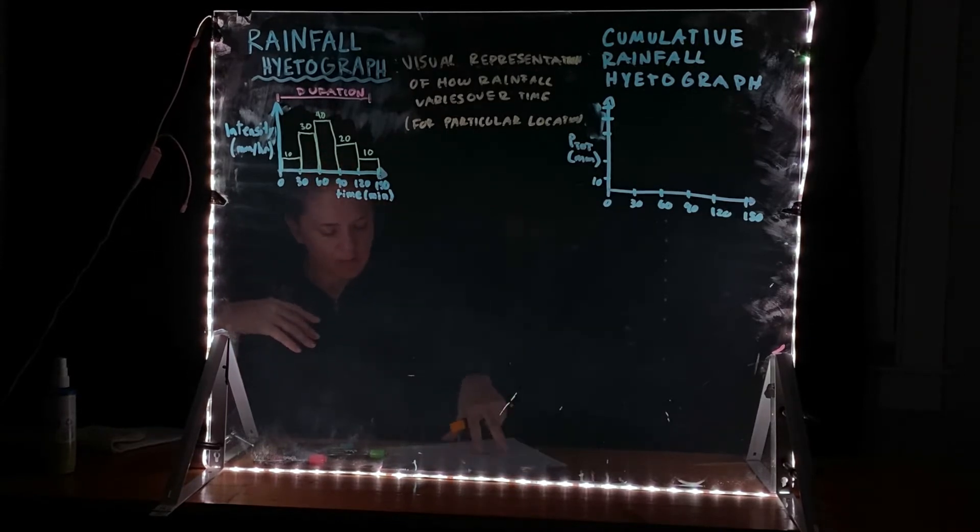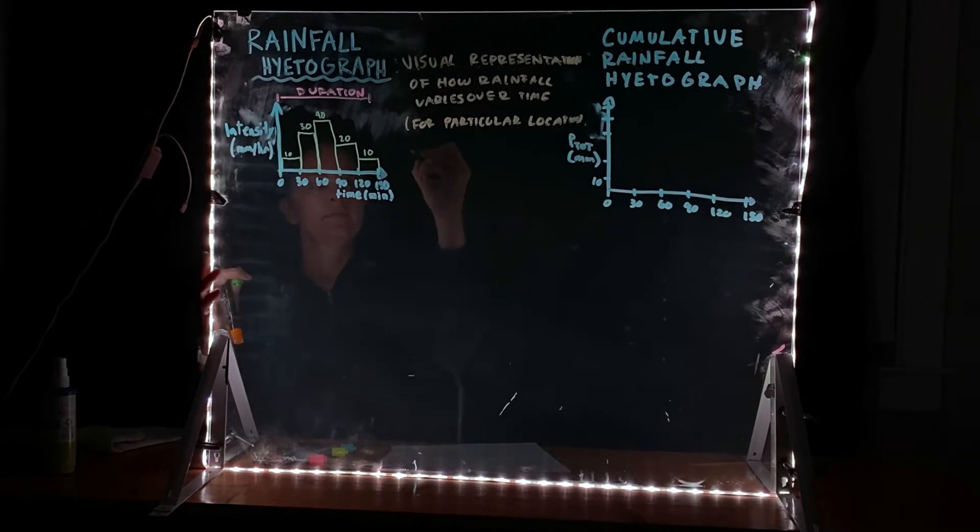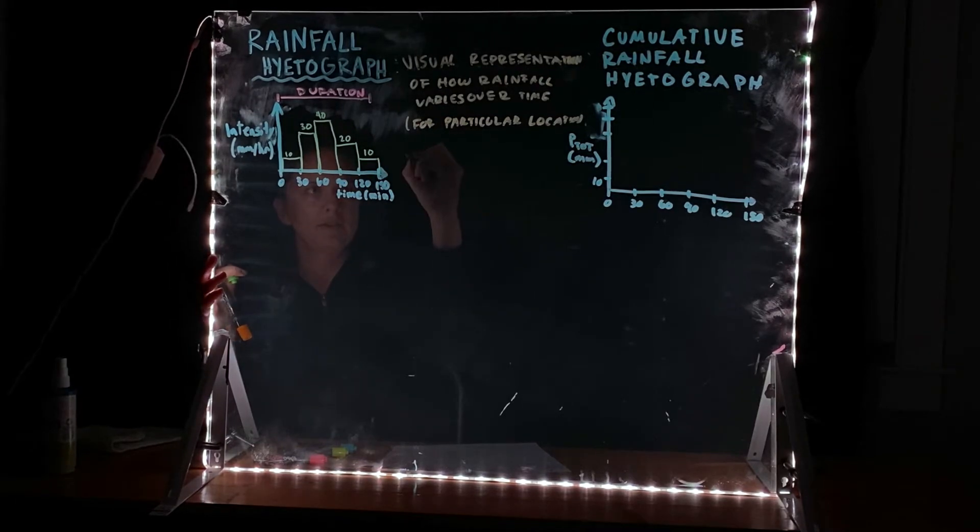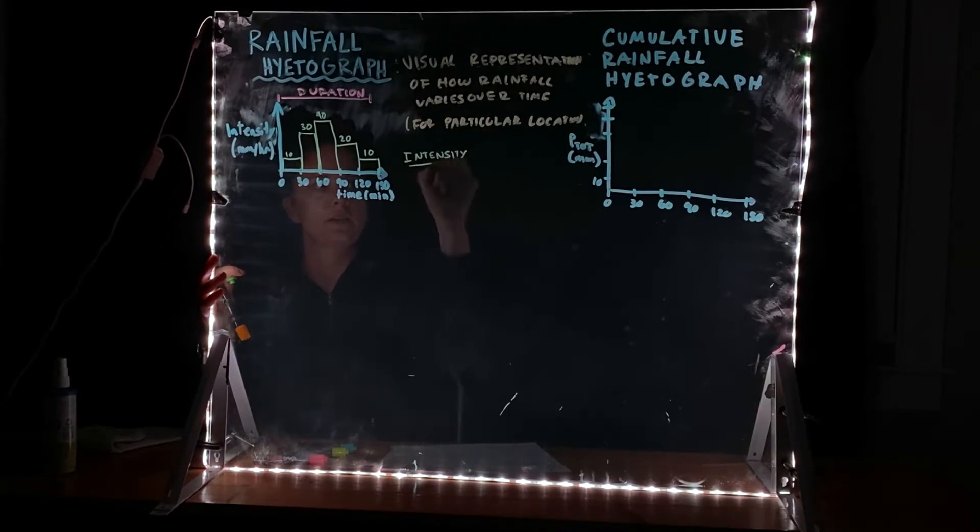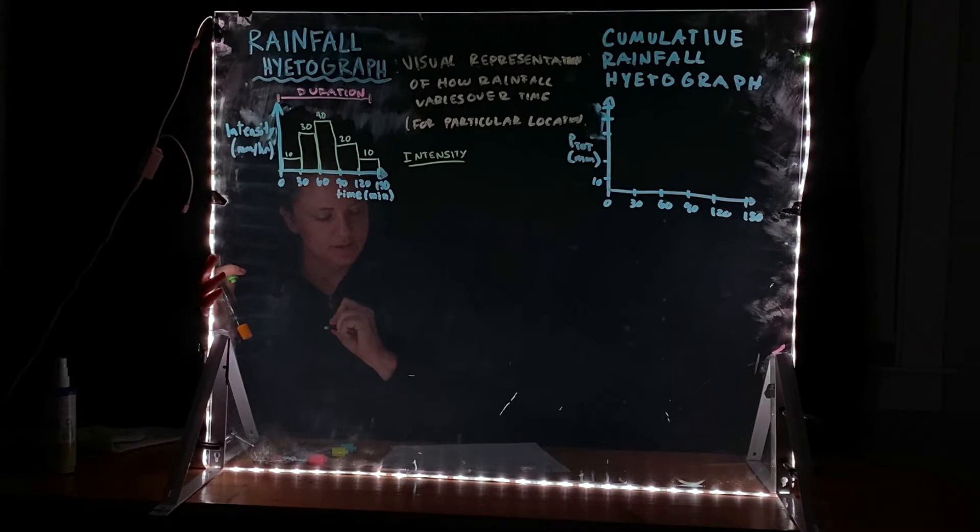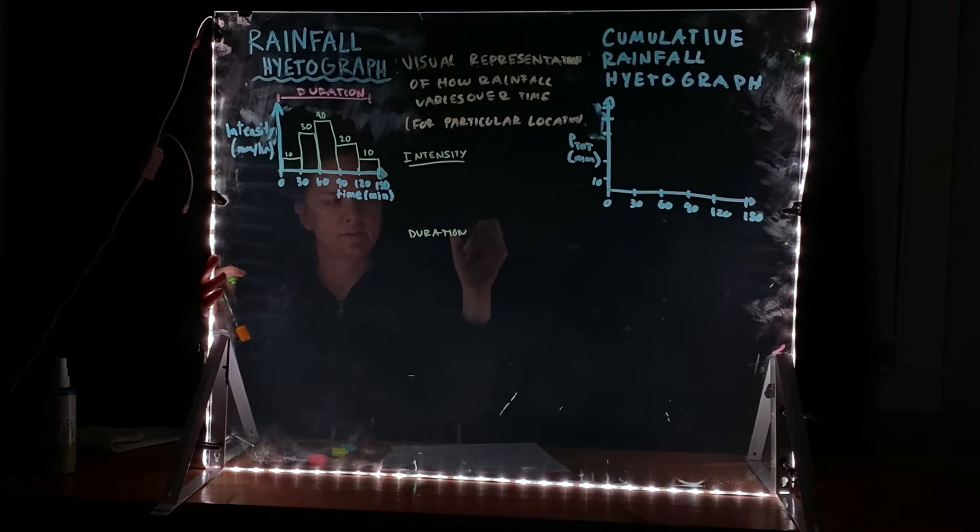So when we talk about a rainfall hyetograph, there are three different parts of this hyetograph that are important, which were mentioned previously when we talked about the characteristics of rain. So those three things are the intensity, the duration, and the frequency.